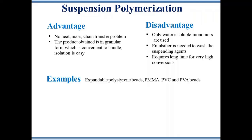In this video we learned about addition polymers. All the monomers that form addition polymers or undergo free radical polymerization are alkenes or functionally substituted alkenes. If you like the video, please subscribe to our channel Polymer World. Thank you.